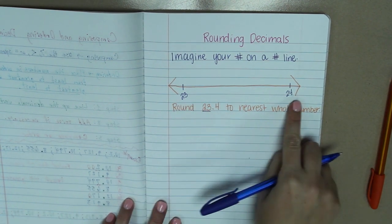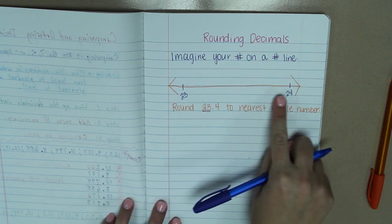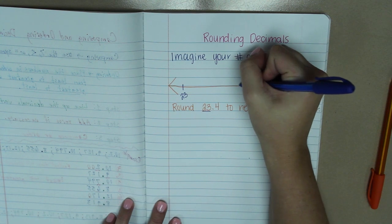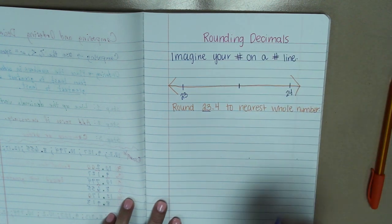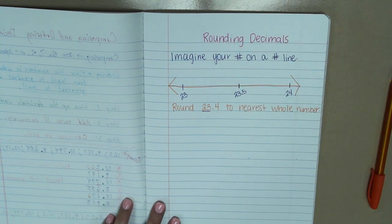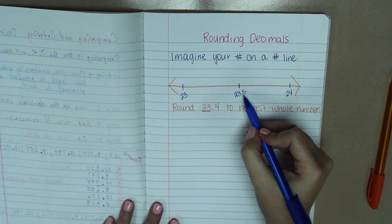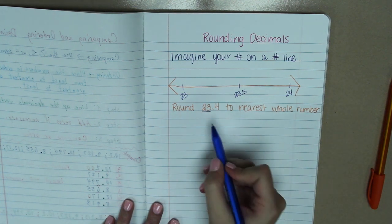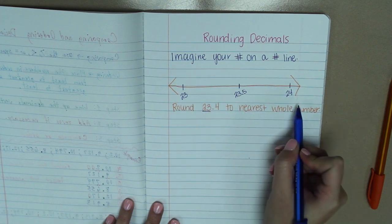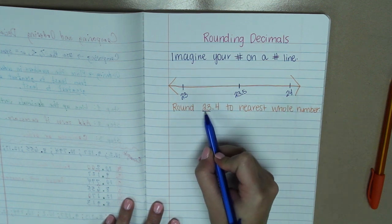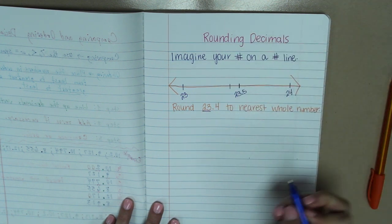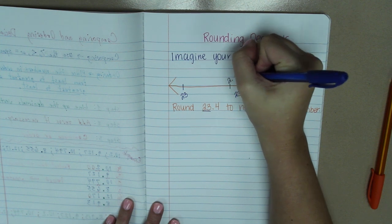Now our number falls somewhere in the middle. So we need to determine where our number is going to be. Now, right in the middle, you should know is going to be 23 and 5 tenths. That 5 tenths will be right in the middle. So then looking at our original number, you're going to decide where on our number line this number is located. So 23 and 4 tenths is going to be just one place to the left of our middle of 23 and 5 tenths.